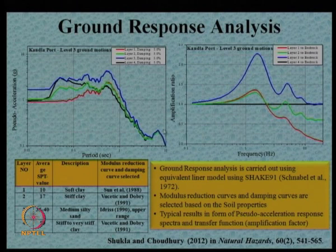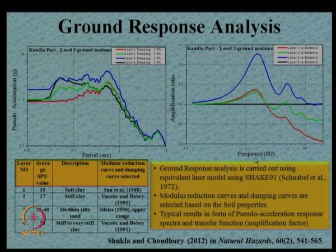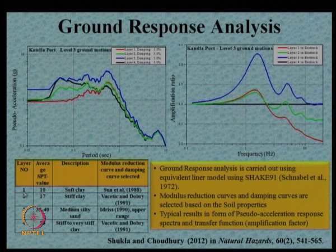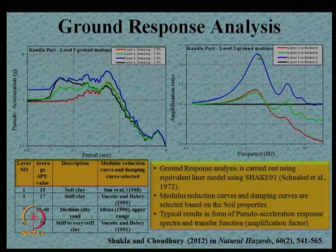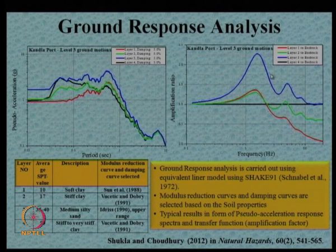For 5 percent damping, the pseudo-acceleration versus period plot results are obtained. The amplification ratio at ground level divided by bedrock level is shown for 4 different layers versus frequency. Layer 4 at bedrock shows no amplification (ratio = 1). Other layers show significant amplification — layer 1 at ground surface shows a ratio of about 1.3, while in between layers the amplification ratio reaches up to about 2.25. This depends on what type of material is present in between and is important for anyone planning a foundation at those intermediate layers.